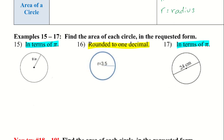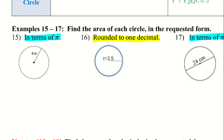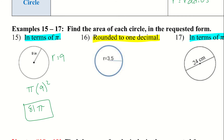For number 15, we want to find the area and leave it in terms of pi. The radius is 9. So we have pi times 9 squared. Since we're leaving it in terms of pi, we keep pi as is and just find 9 squared, which is 81. So the area of this circle is 81 pi.